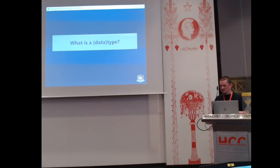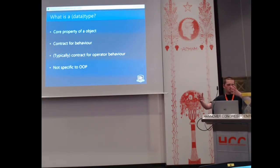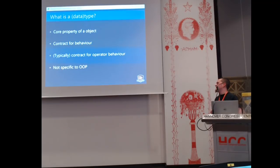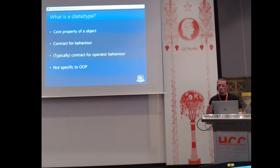We need to take a step back and ask: what is a data type? A data type in the context of programming languages is a core property of an object, where an object refers to some memory in the computer, some data we're working on. We could define a type or type definition as a contract for the behaviour of that data — how does an object behave when I call a method on it or pass it as an argument to another method? What behaviour can I expect?